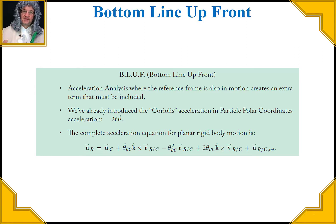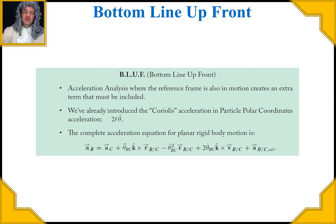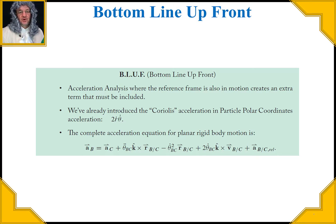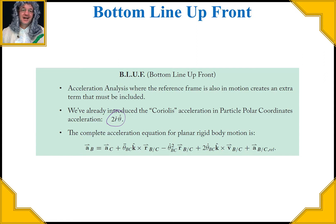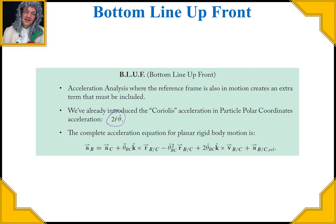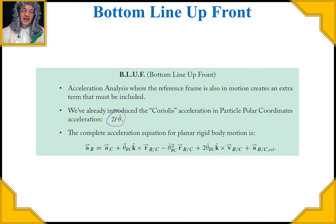Sometimes we have a frame of reference that is moving, and we might also have a part of the piece we're looking at that changes in length. When that happens, we get an additional component called Coriolis acceleration. In polar coordinates, it appears as 2·ṙ·θ̇, where ṙ is radial velocity and θ̇ is angular velocity — the combination of those two creates a separate acceleration term.